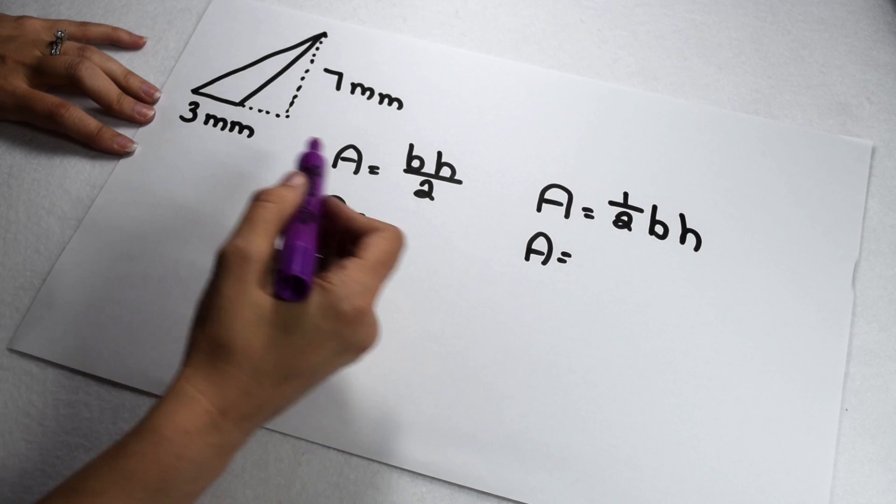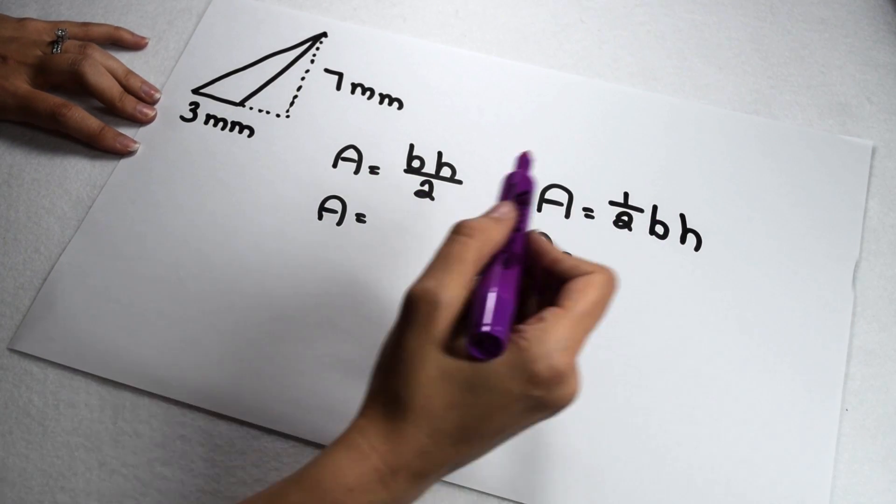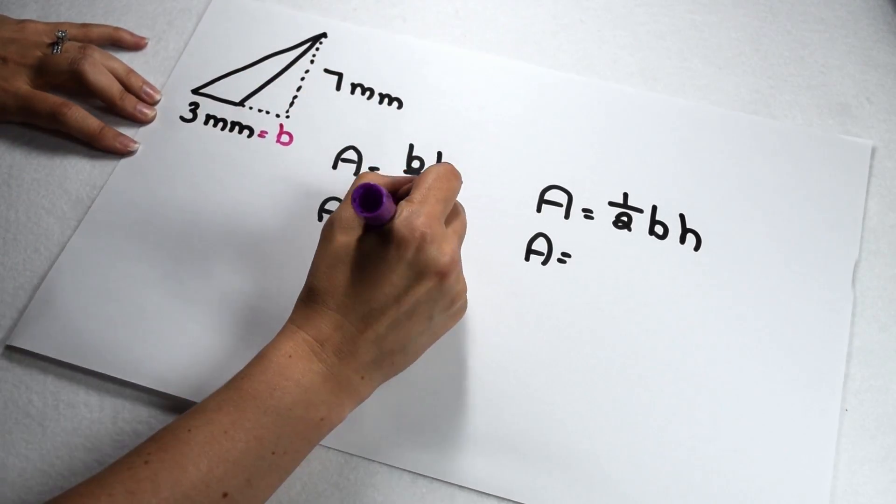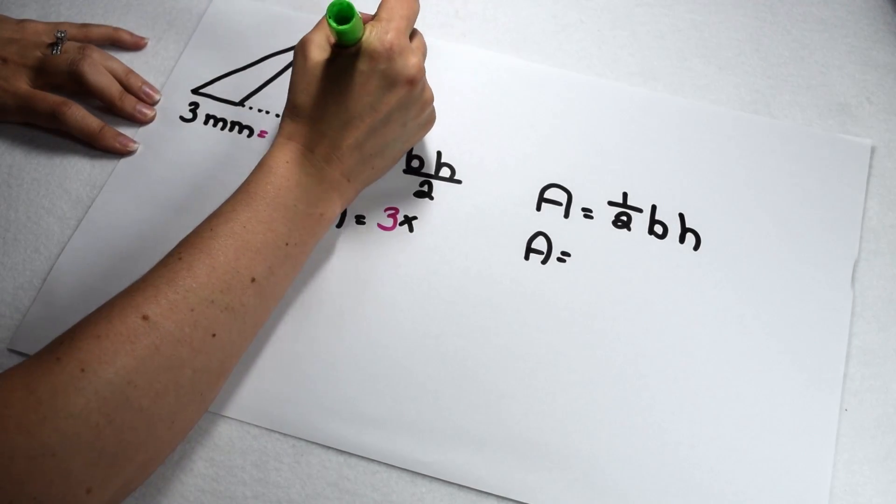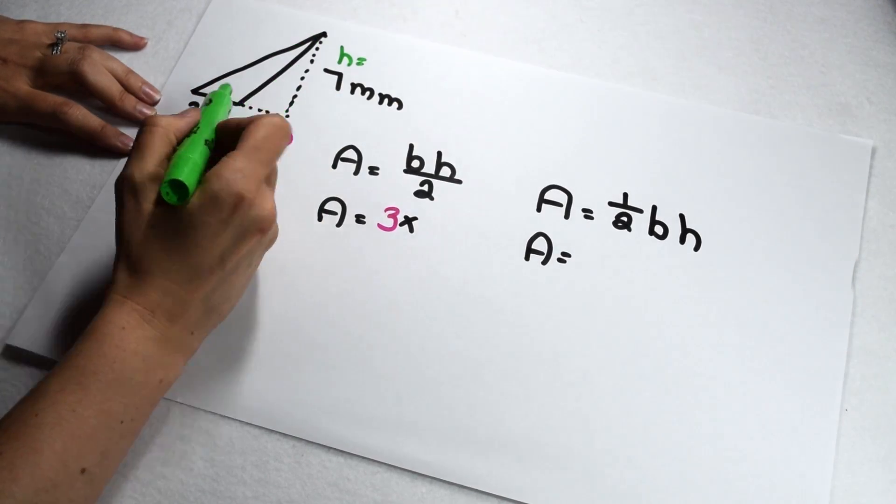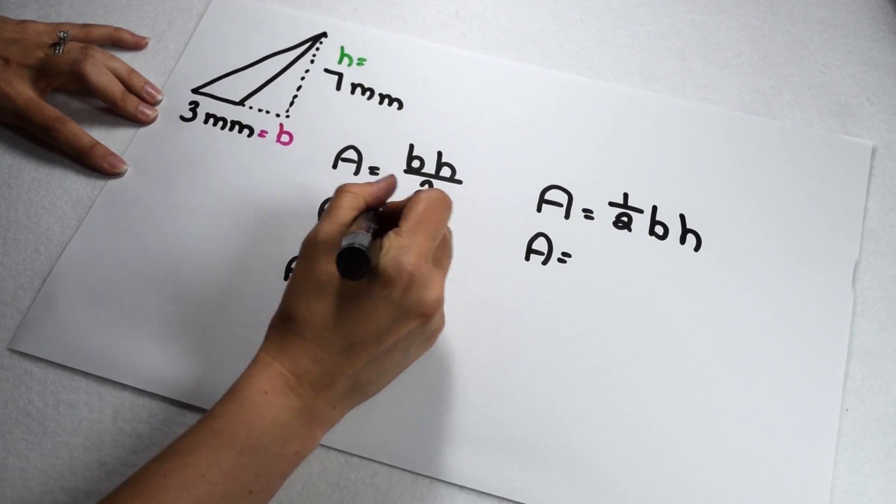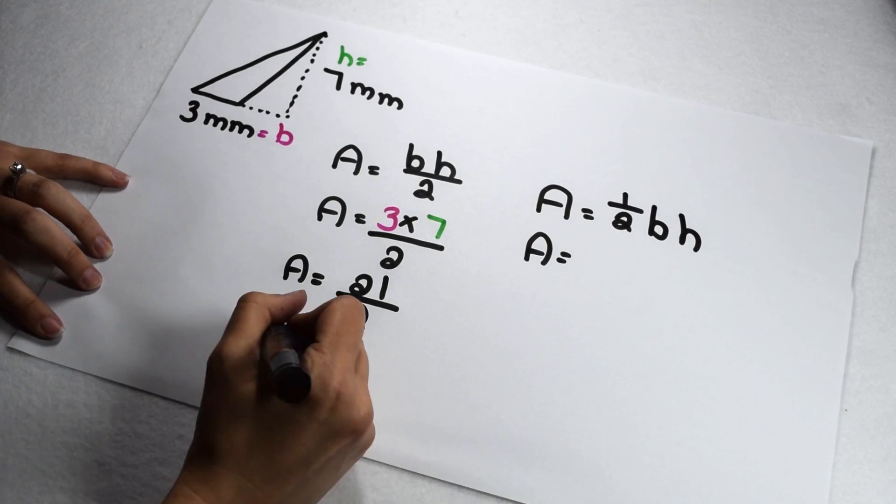We're going to find the area of the triangle by using both of our equations, bh/2 and ½bh. On my triangle, 3 millimeters is my base, 7 millimeters is my height. Remember, height of a triangle is always perpendicular to my base. I can start by multiplying 3 times 7. Three times 7 gives me 21, and now I need to divide 21 by 2. Twenty-one divided by 2 gives me 10 and a half.